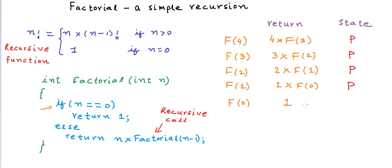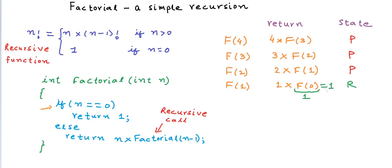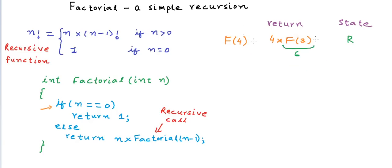F0 returns 1 and finishes, and the computer resumes F1. Now that we have F0, F1 is calculated and finishes, then F2 is resumed. F2 is calculated and returns the value 2. Then F3 resumes and finishes, and finally we get back to F4. F4 finishes and returns probably to the main method.